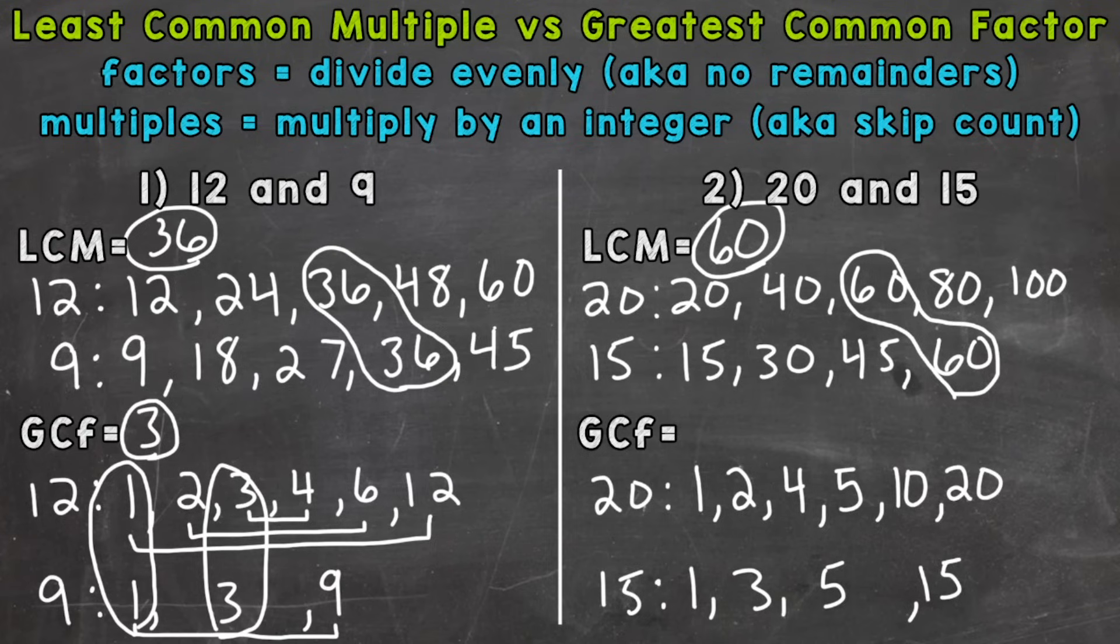So now we need to find the greatest one that they have in common. And it's going to be 5. They both share 5 there and that's the greatest one that they have in common. So that is our GCF or greatest common factor.